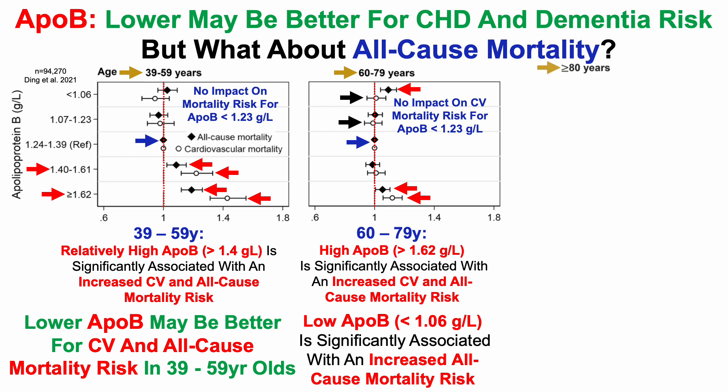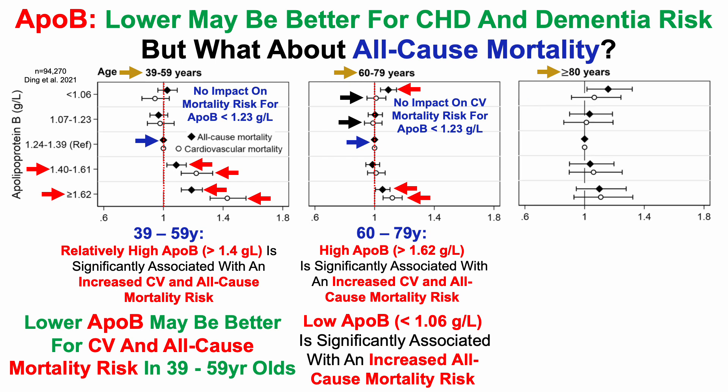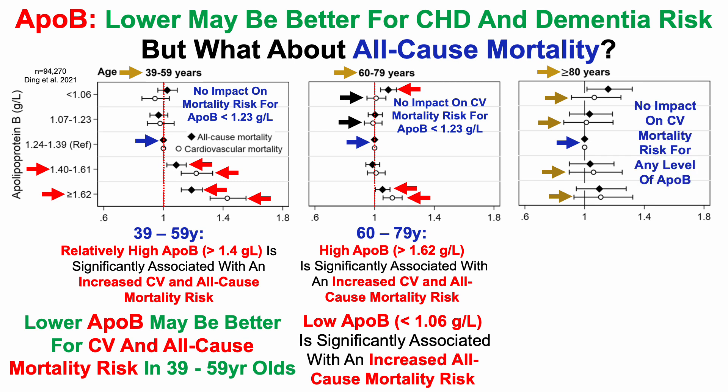What about older than 79? This study also provided data for people older than 80 years old. Starting with the referent, we can see that relatively higher APO-B and lower APO-B was not significantly associated with cardiovascular mortality risk for any level of APO-B.